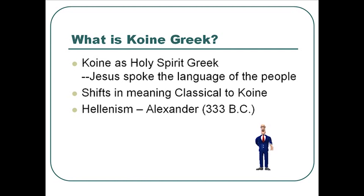Galatians 4:4 says, 'In the fullness of time God sent his son.' It's interesting to look at this from a linguistic point of view. Prior to 300 BC, various regions spoke so many different dialects that it would be very difficult to communicate the gospel. But after Alexander, the whole ancient world spoke Koine Greek, and the gospel could spread much more easily. After Alexander's coming, the Old Testament was translated into Greek, and others could read the Old Testament prophecies of the coming Messiah prior to Christ. Thus, in the fullness of time God sent his son — he even included the Koine language as part of his preparation of the world for his son.